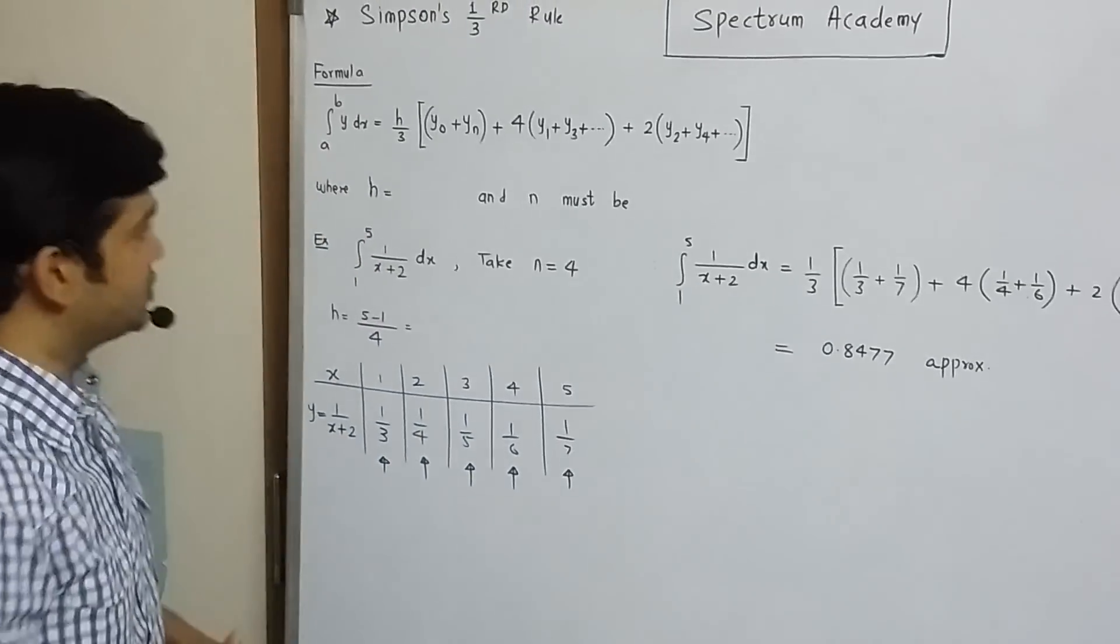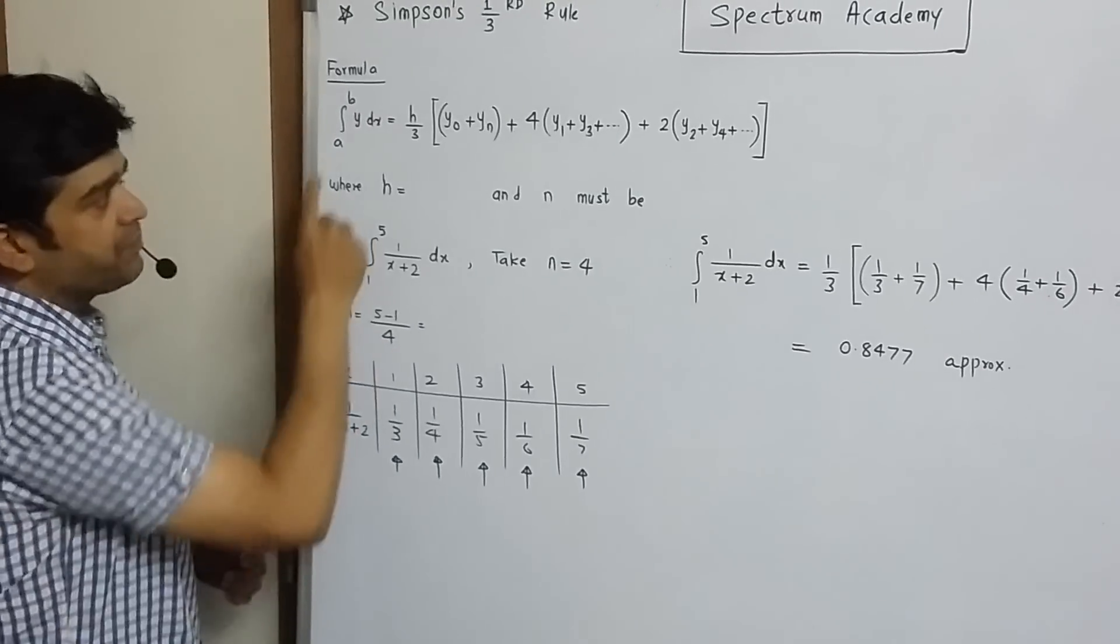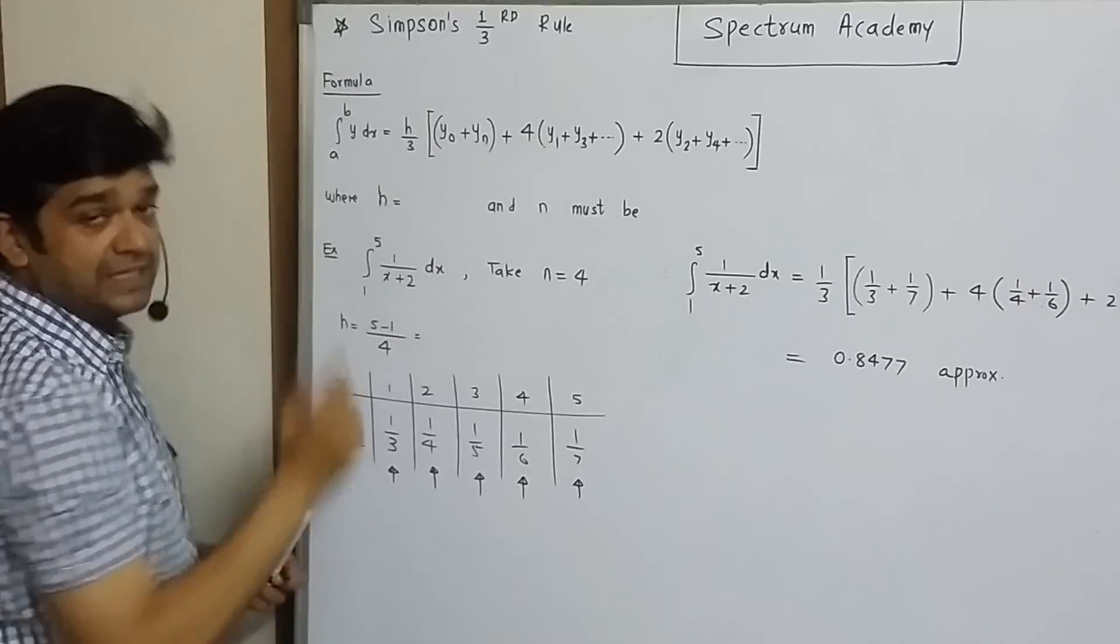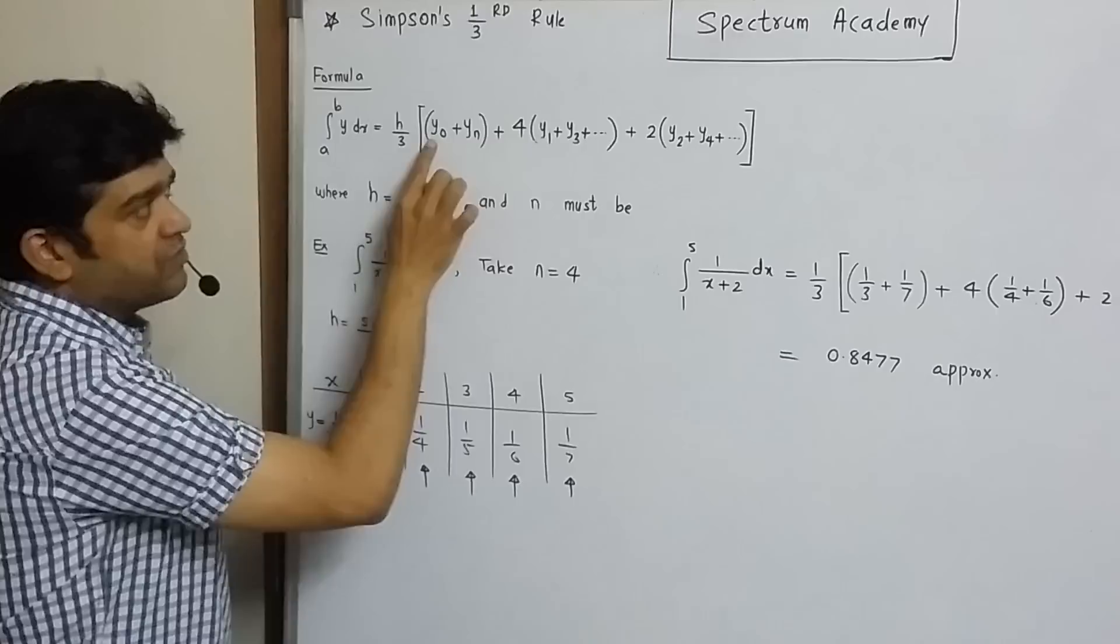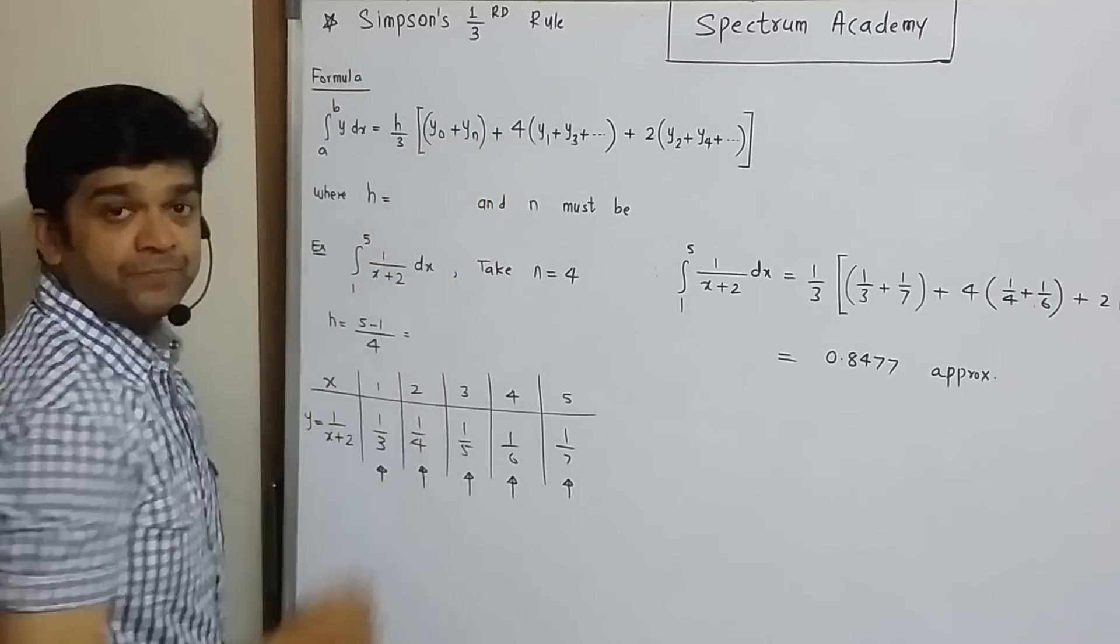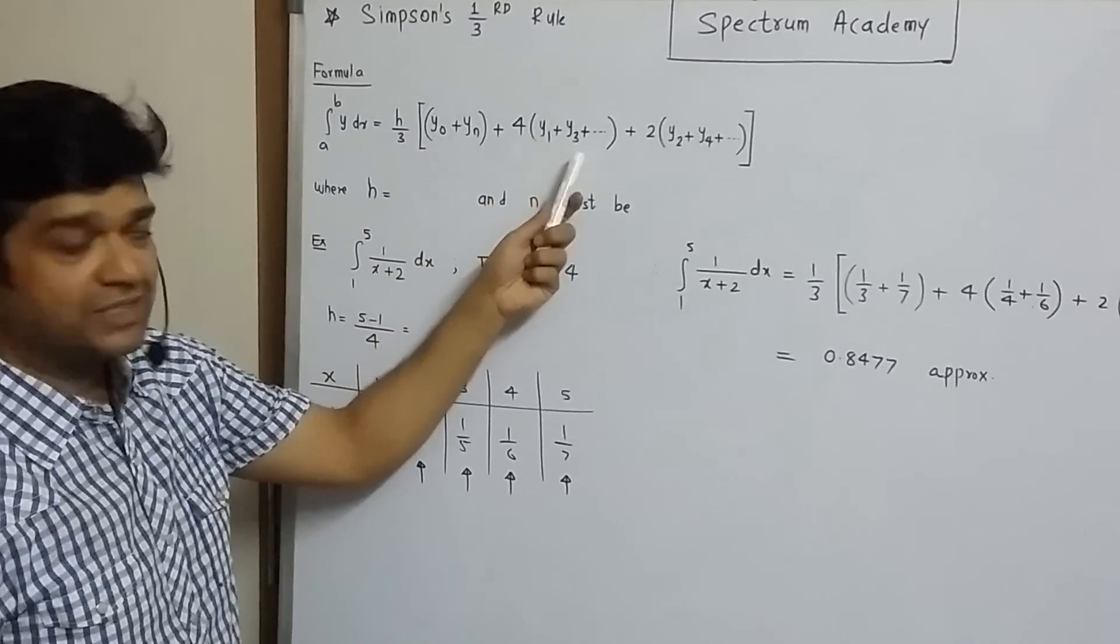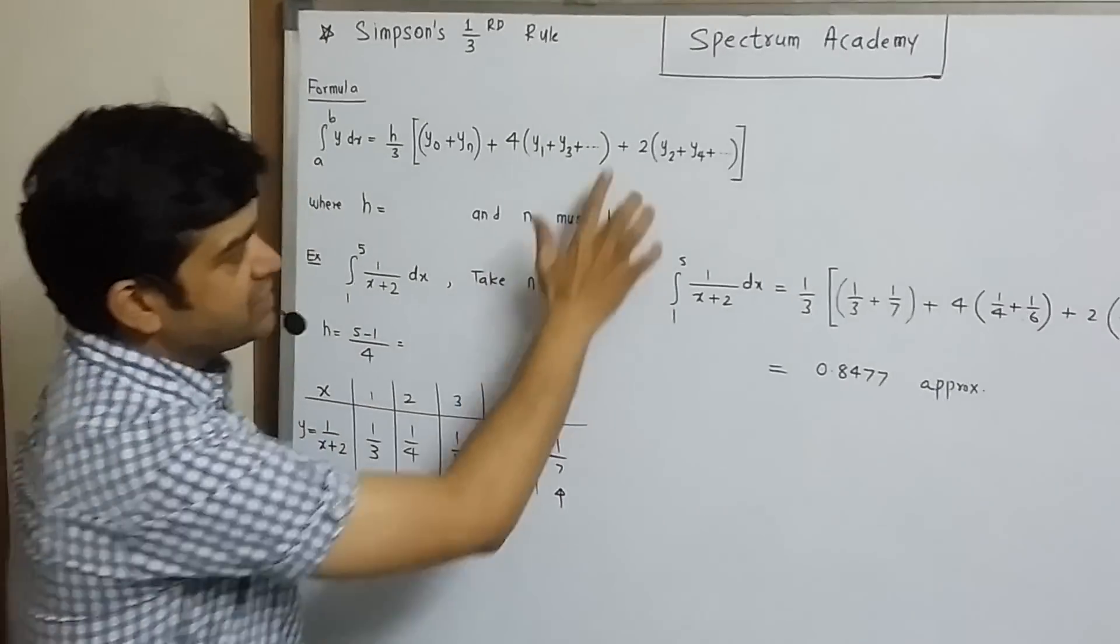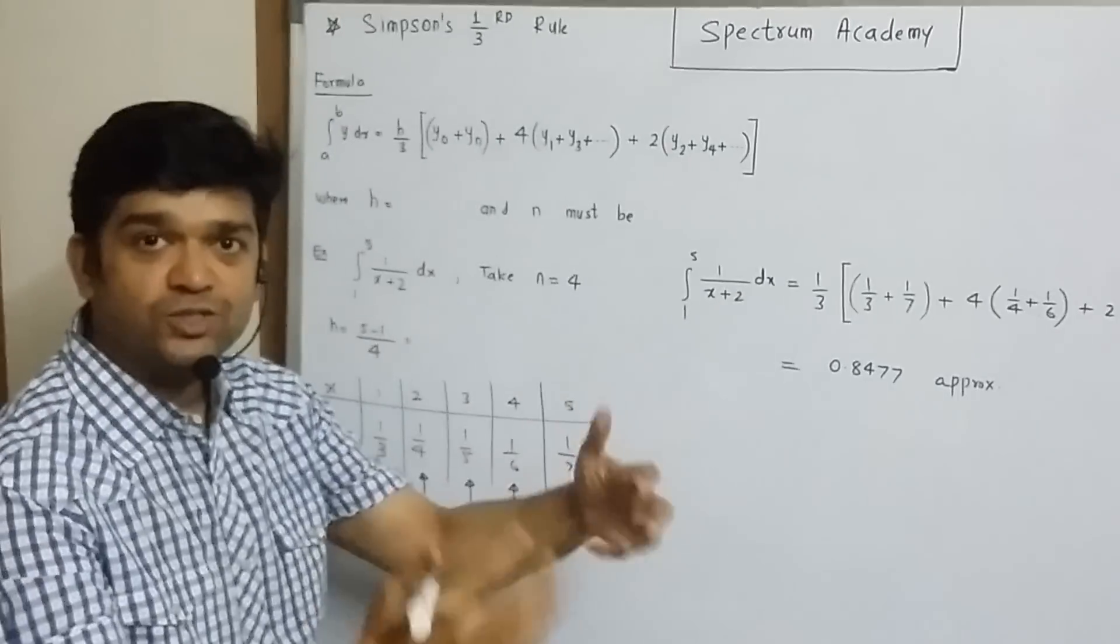The most important thing is to remember this particular formula. What is this formula? Integral a to b y dx, it is equal to h upon 3 times y0 plus yn plus 4 times y1 plus y3 plus y5 and so on, plus 2 times y2 plus y4 plus y6 and so on.